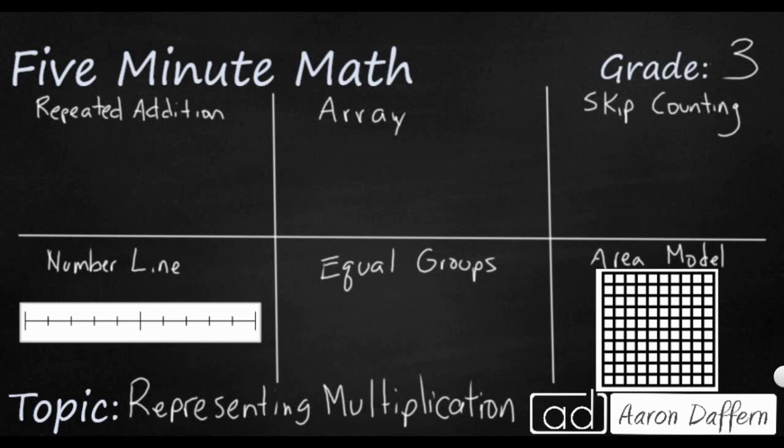So let's start with a simple multiplication problem: four times five. Four groups of five is going to get us 20.